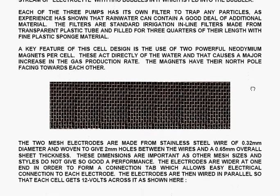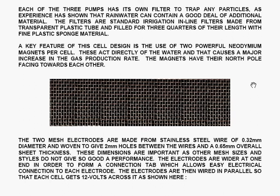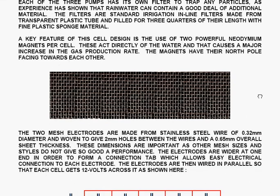Each of the three pumps has its own filter to trap any particles as experience has shown that rain water can contain a good deal of additional material. The filters are standard irrigation in line filters made from transparent plastic tube and filled for three quarters of their length with fine plastic sponge material.